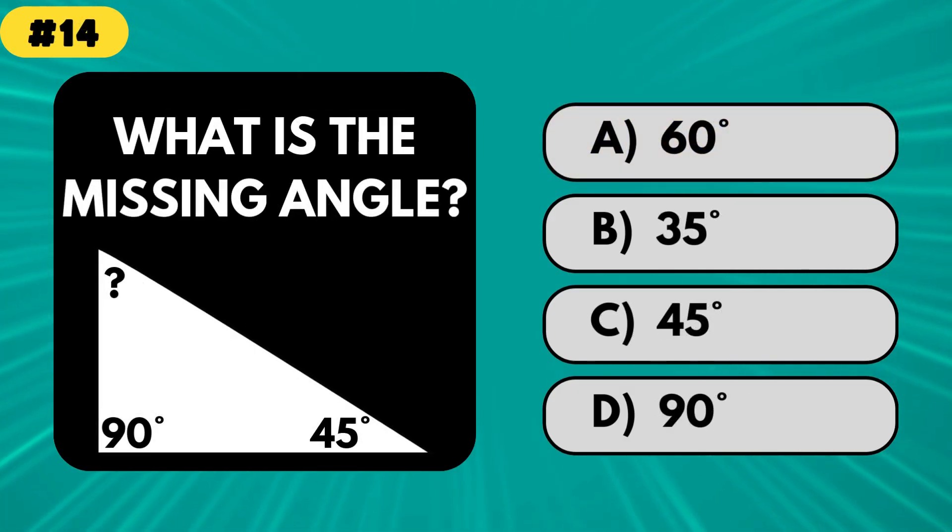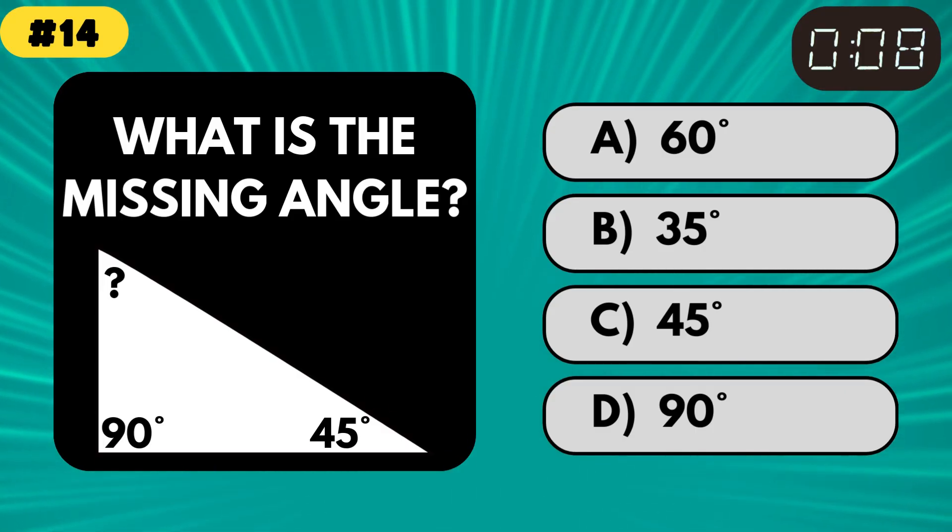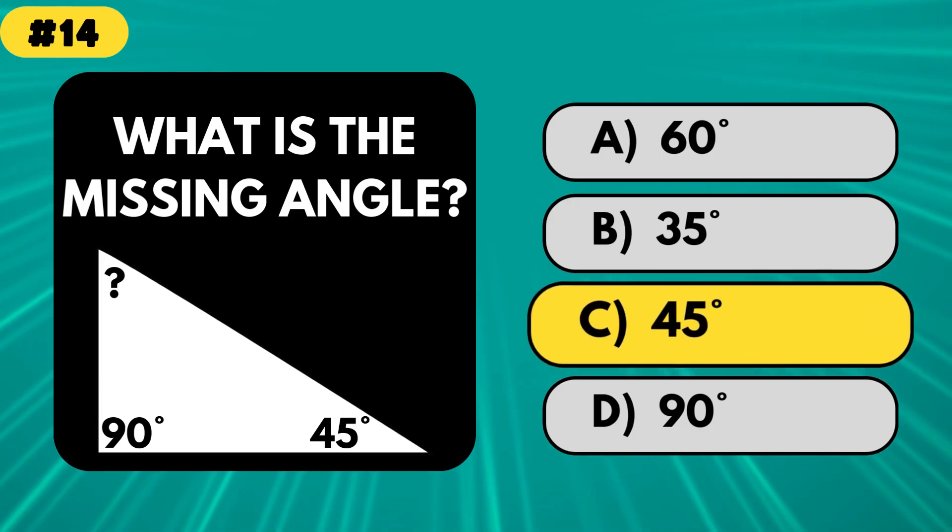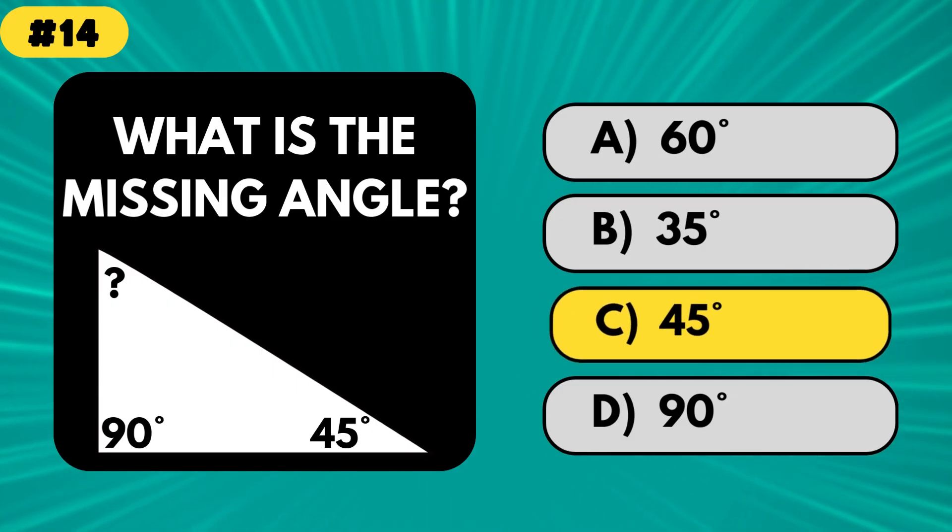If a triangle has two known angles that are 90 degrees and 45 degrees, what's the missing one? Amazing. The answer is 45 degrees. All angles of a triangle must add up to 180 degrees.